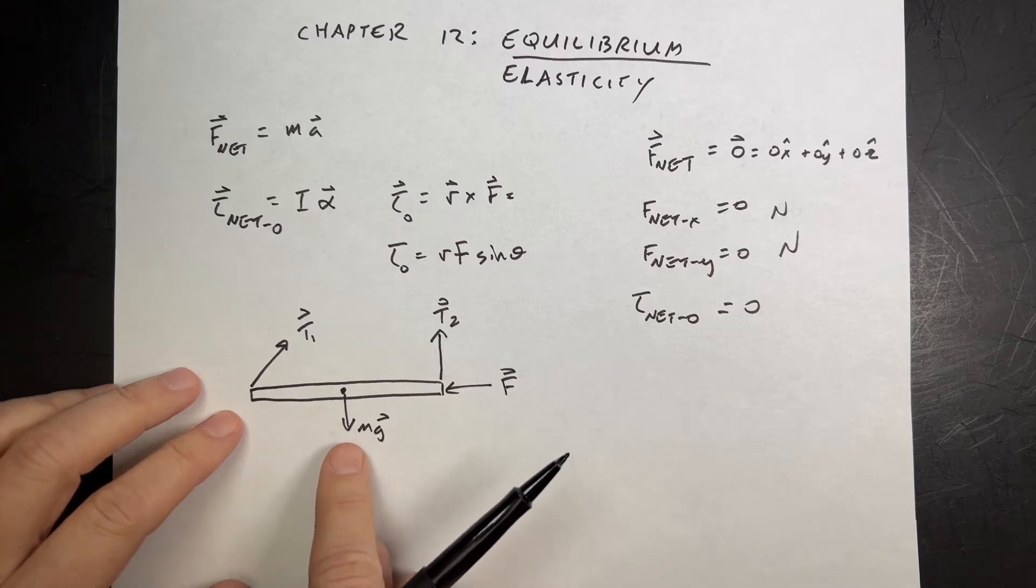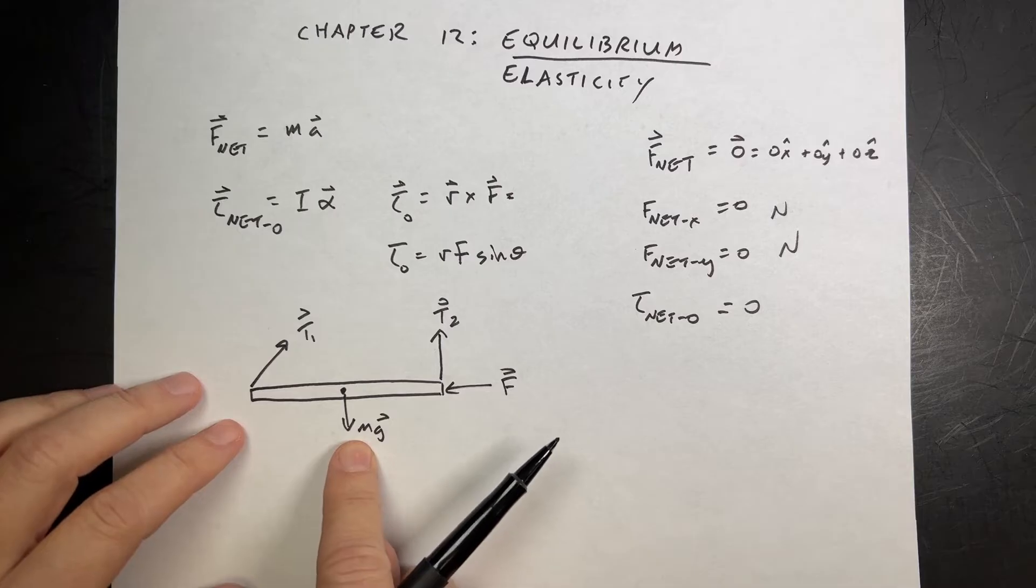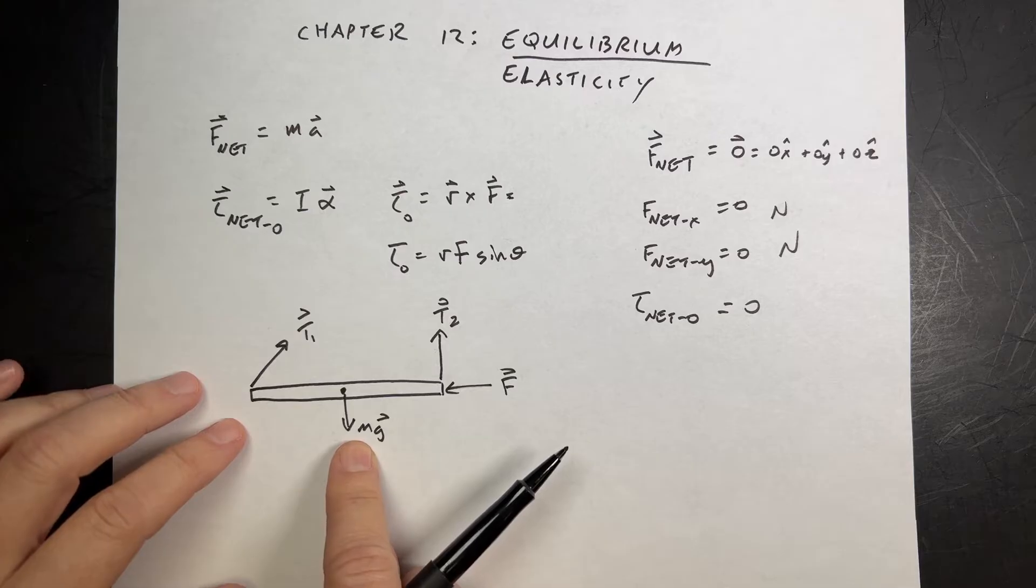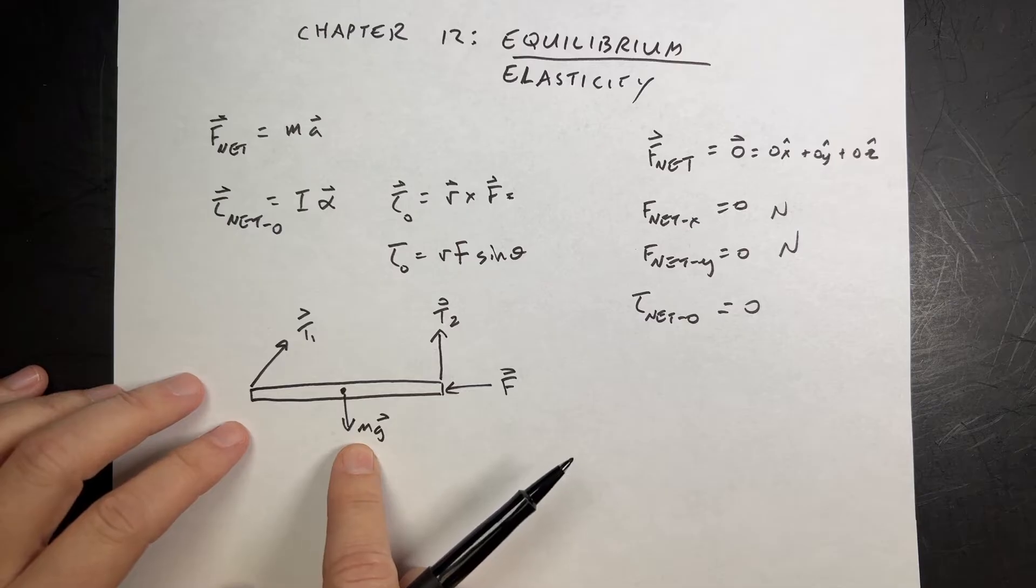If it's not uniform density, the center mass is not the center. But the center mass is the point. This is technically the center of gravity would be the center mass. And like I said, if you have a non-constant gravitational field, the center of gravity and the center of mass might be different.